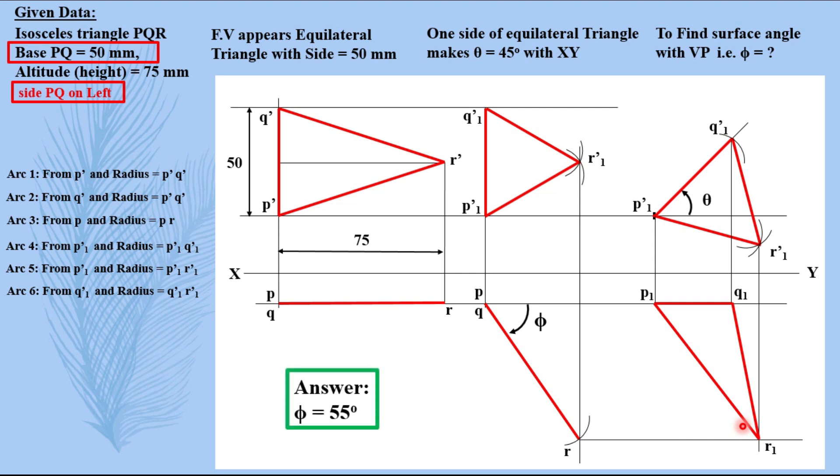Here if you do all these things correctly on your sketchbook, then you will find answer phi equals to 55 degrees approximately.